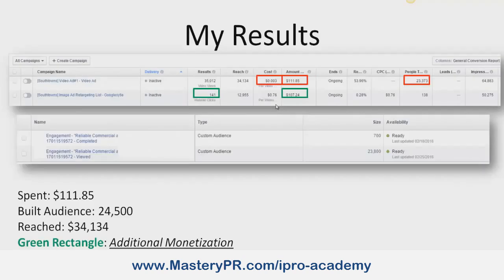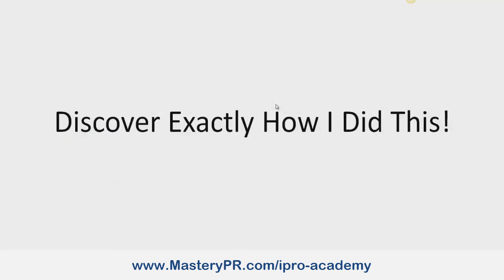Here are my results. We got 35,000 views with a reach of 34,000 people — some people watched it a few extra times. It cost me less than a penny per view (point zero zero three), and I paid $111.85 total. I built two different custom audiences. The total combined audience is 24,500 people. We reached 34,134 people overall, and I did all this in 10 days.